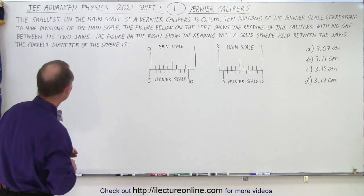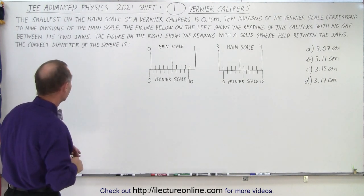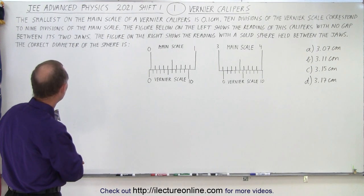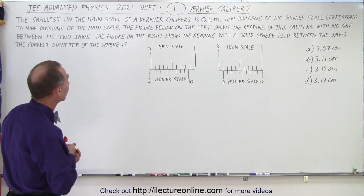It deals with vernier calipers. Notice this was for shift one, there will be another set of questions for shift two which we'll do at a different time. So here we have the smallest division on the main scale of a vernier caliper is 0.1 centimeter.